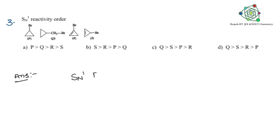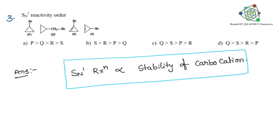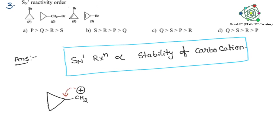Now coming to the major point — question 3 asks about SN1 reaction reactivity order. Everyone should remember: SN1 reaction rate is directly proportional to the stability of the carbocation. If carbocation stability is more, SN1 speed is also very high. For compound Q, when Br is removed a hydride shift takes place, converting a primary carbocation into a tertiary carbocation.